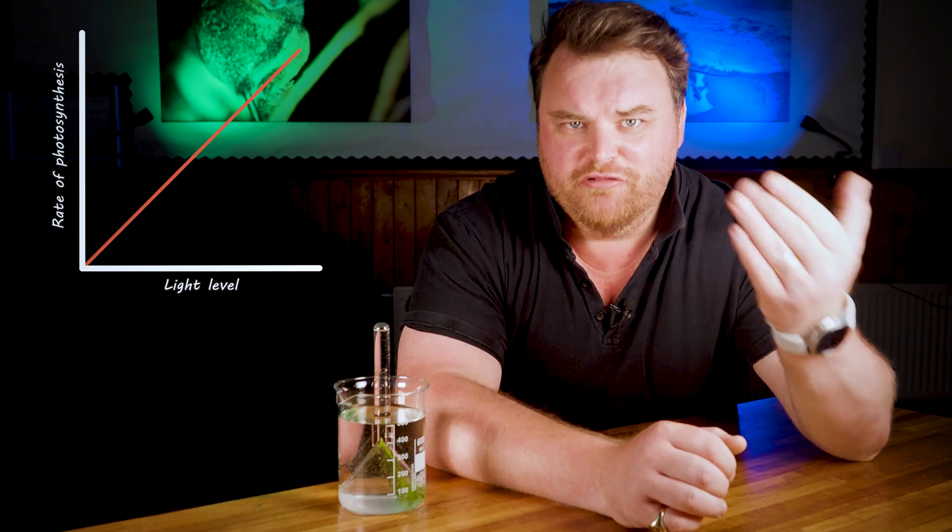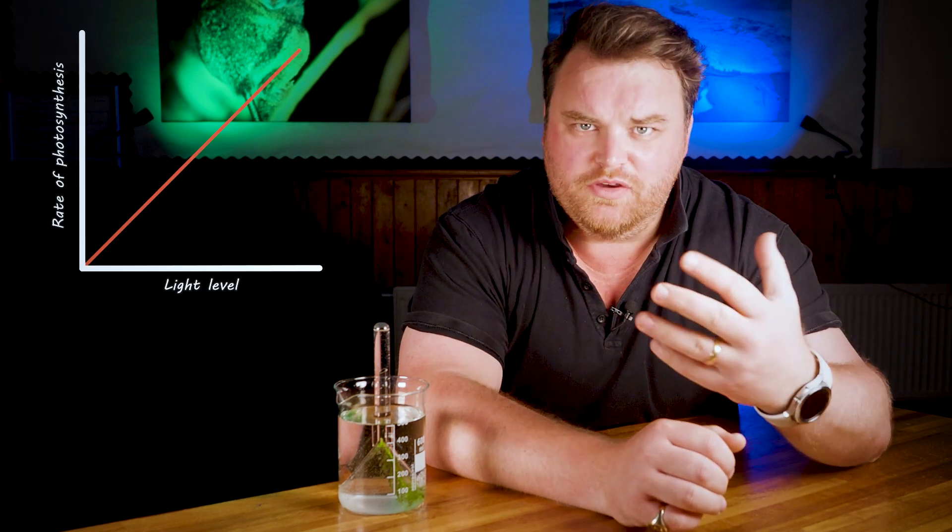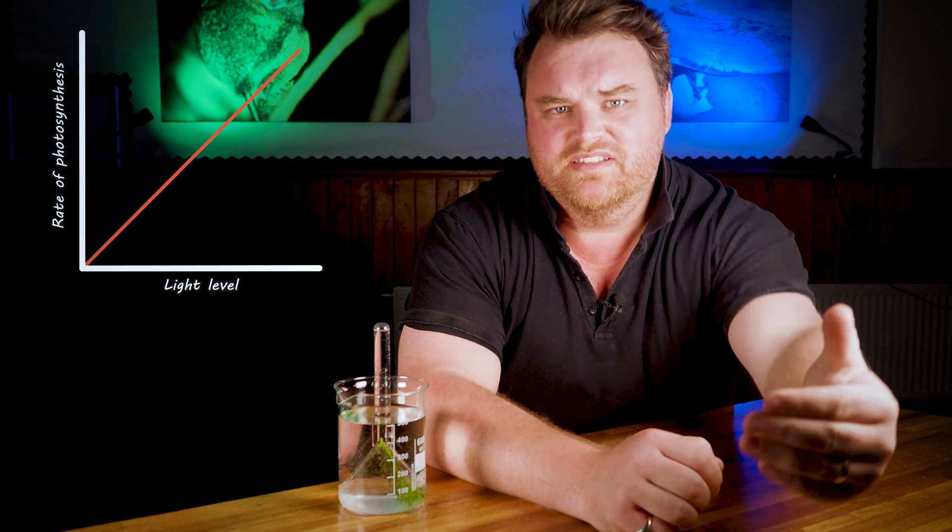So what we should find here is a linear relationship — as light increases, so does photosynthesis. In reality, because of a physical principle called the inverse square law, doubling the distance quarters the available light. So if you're measuring distance rather than light level, you'll find an exponential rather than linear relationship.